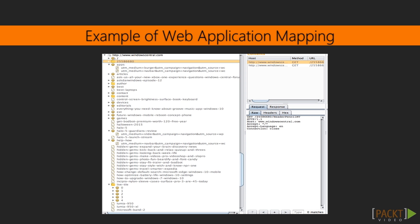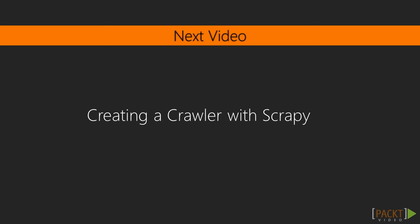Basically, the aim of mapping is to cover the entire application in order to identify the interesting resources for the vulnerability identification phase. In this video we learned what application mapping is and why it is important. In the next video we'll start developing our own crawler — let's get ready.